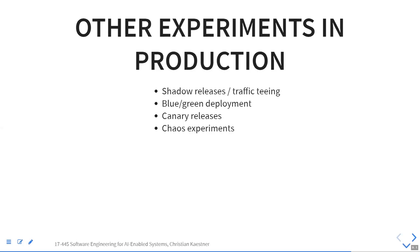Something interesting often possible in machine learning is shadow releases or traffic teeing. You have two replicas — exact copies of your system — and you send the same requests coming in production to the second copy as well. Only one of them responds to users. You typically use the old system to respond, but run the new system in the background and just make predictions. If the prediction is different, you don't know how a user would have reacted, but you can see how often the predictions differ.